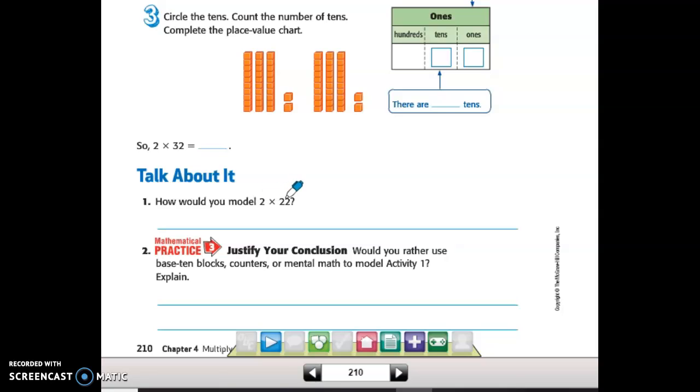So we've modeled two times 22. And I don't want to make 22 groups. So I'm just going to make two groups. And in each of these groups, I'm going to model 22. And I don't actually need the blocks. I can just draw lines. And since I need two groups of 22, I'm going to draw another group of 22. Because this is 22, two times.